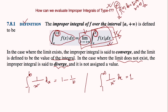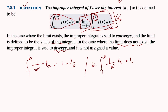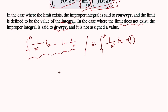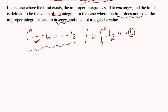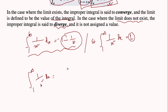Now let us evaluate the integral from 1 to infinity of 1/x² dx. From our previous video, we said this result will be 1. Let us verify this using the definition. We replace the upper limit infinity by a large number b, so we write: limit as b tends to positive infinity of the integral from 1 to b of 1/x² dx.